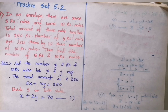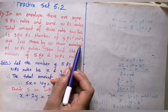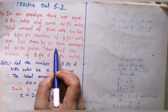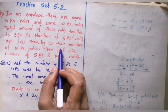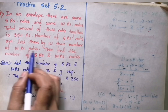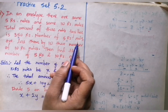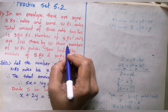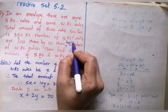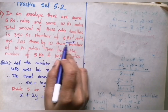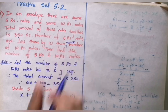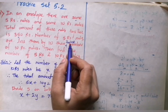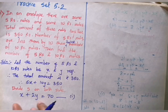Now from the second condition. Students, there is a correction in this question. The correct statement is: the number of ₹5 notes is less by 10 than twice the number of ₹10 notes. So write down 'twice' here — there is a little correction in your textbook. From the second condition, we use twice the number of ₹10 notes.